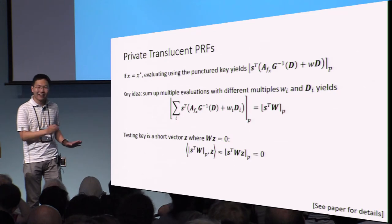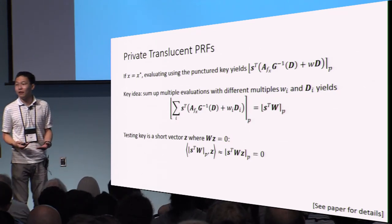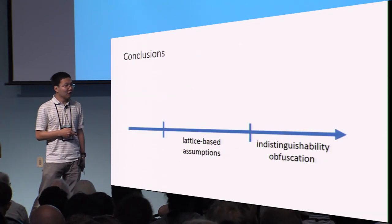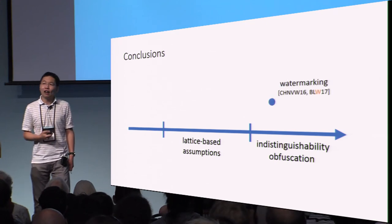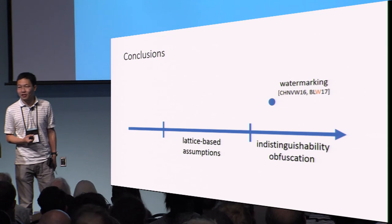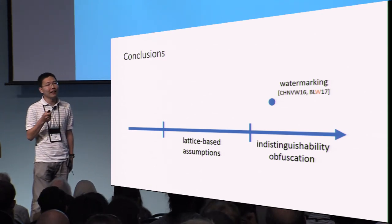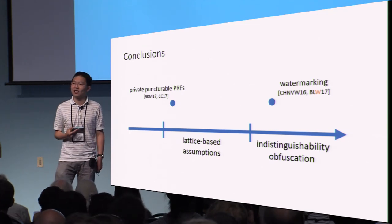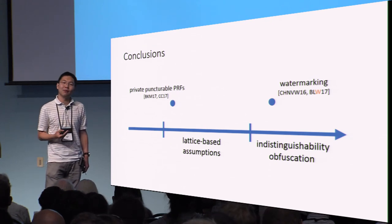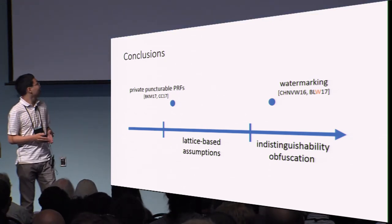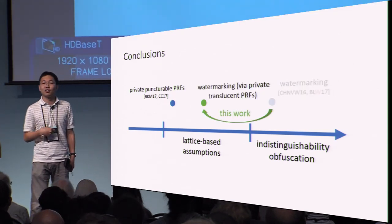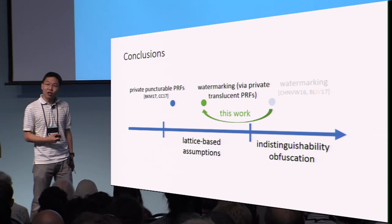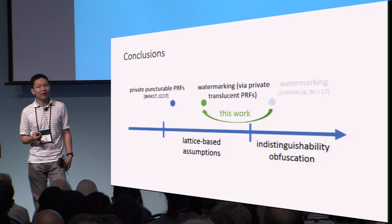There are many technical details that I glossed over here, but I hope I gave you a flavor for how we achieve private translucent PRFs from the LWE assumption. I'll refer you to the paper for the full details of our construction as well as its formal security analysis. To conclude: prior to this work, we basically knew how to build cryptographic watermarking with strong security guarantees from indistinguishability obfuscation. At the same time, prior work at Eurocrypt gave our first construction of private puncturable PRFs from the LWE assumption — closely related to watermarking, yet it was not clear that private puncturable PRFs suffice for building watermarking. In this work, we introduce a strengthened notion called a private translucent PRF that can still be built from standard lattice assumptions and is also sufficient for cryptographic watermarking. So today, we can achieve cryptographic watermarking from standard assumptions.